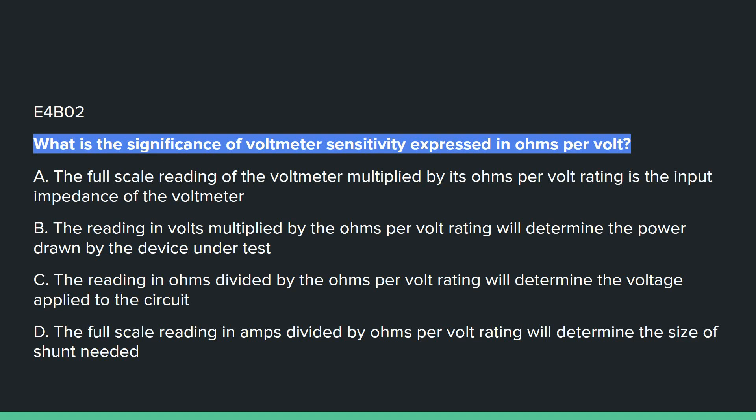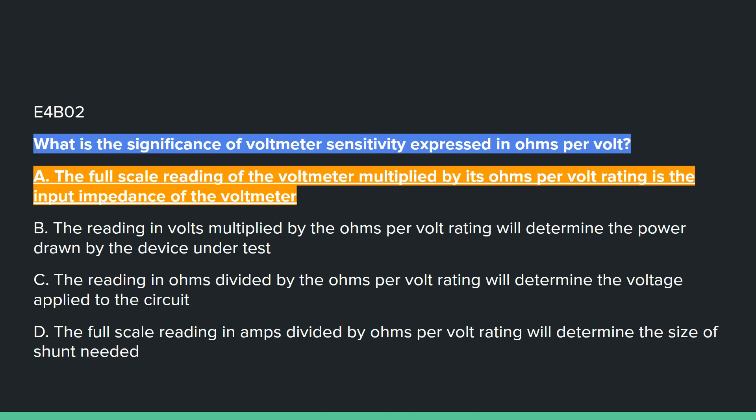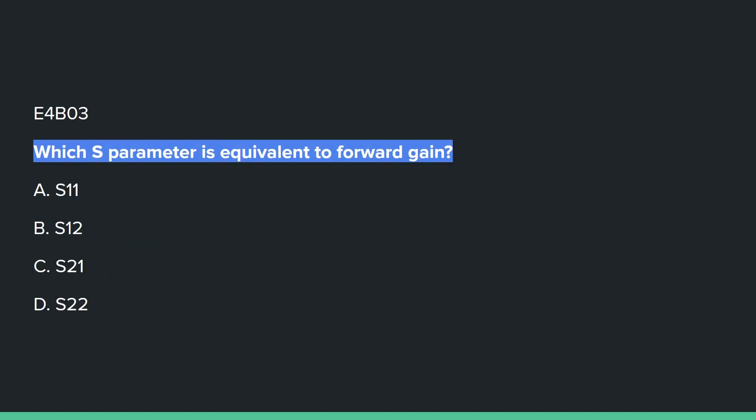E4B02: What is the significance of voltmeter sensitivity expressed in ohms per volt? Answer A: the full-scale rating of the voltmeter multiplied by its ohms per volt rating is the input impedance of the voltmeter.